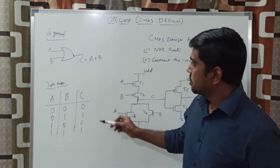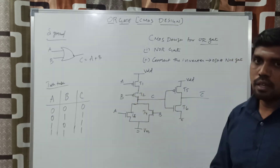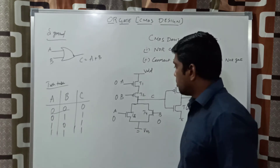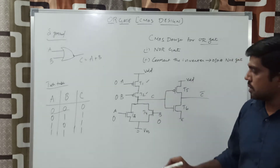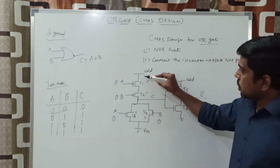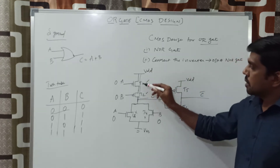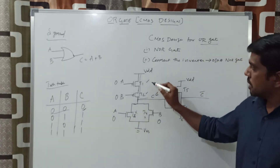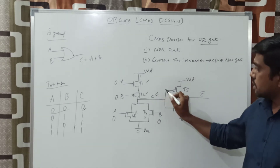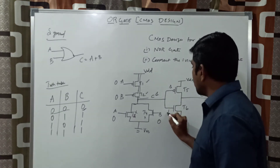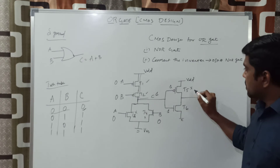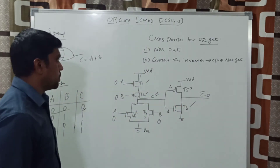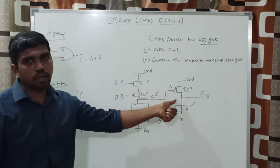Now we check the result. Taking the first input from the truth table — A=0, B=0 — assigned to the NOR gate. In this case, T1 and T2 transistors turn on, and T3 and T4 turn off. VDD is connected to the output through T1 and T2, so the NOR gate result is 1. But the actual result of the OR gate should be 0. This 1 is applied to the inverter — T5 turns off and T6 turns on, pulling the output to ground. The final result is 0, which matches the truth table output.